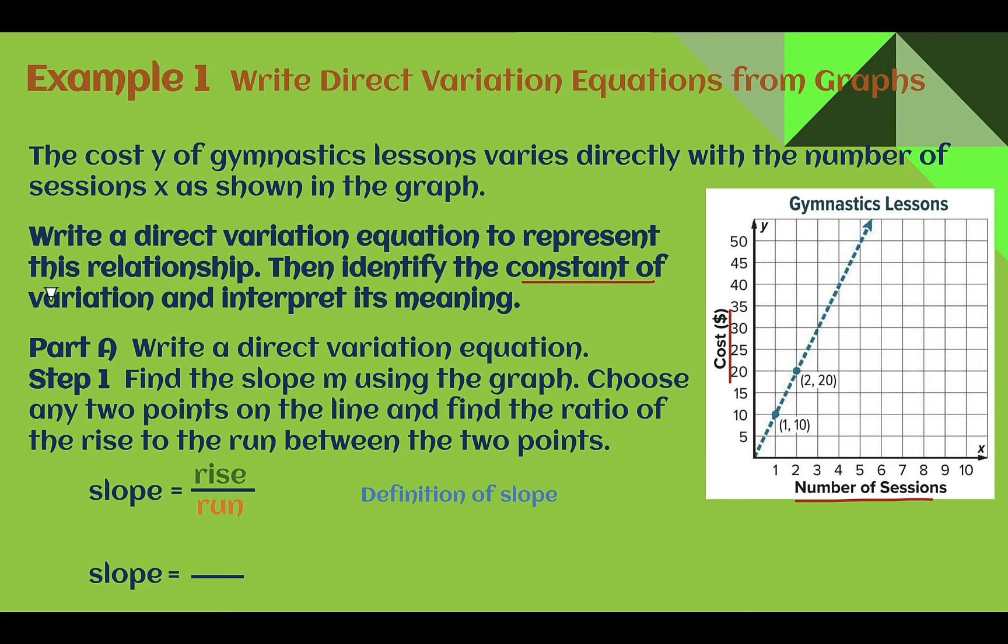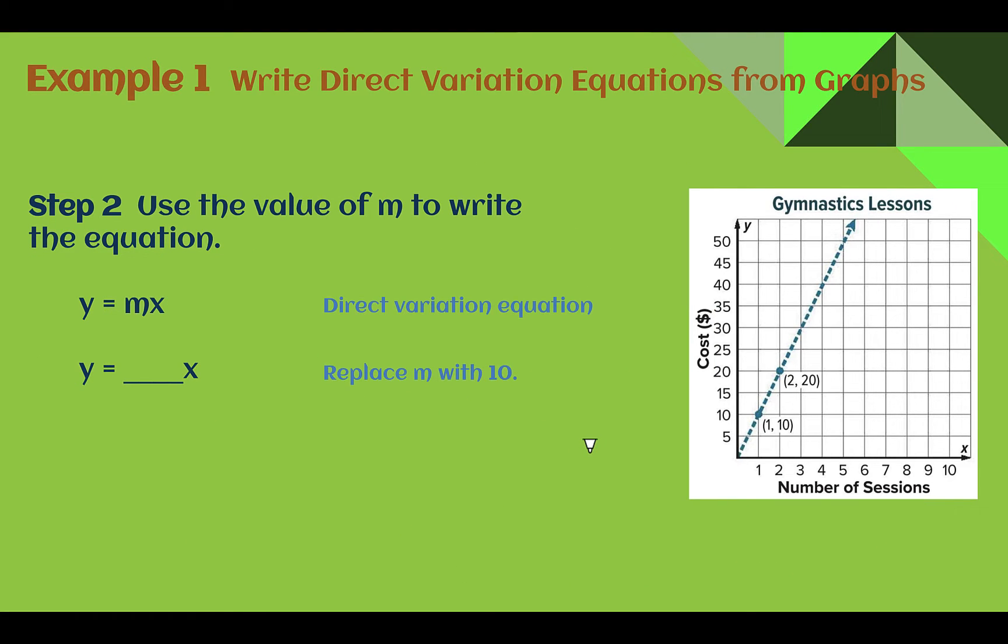If we want to find our constant of variation, which in other name is a slope, then we can find using the graph by finding our rise over our run. So I am given two points here. If I make my slope triangle, I can see that it went up 10 and over 1. So the price went up $10 for one more session. So the slope of this line would then be 10 over 1, or just 10. Now that I figured out that the slope is 10, I can quickly write my direct variation equation. I just take 10 and plug that in for m. So instead of m, I am going to write 10. My direct variation equation is y equals 10x, with the only thing that we changed was our slope once we found it.